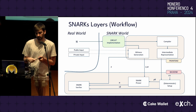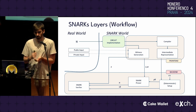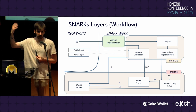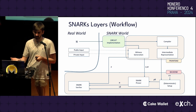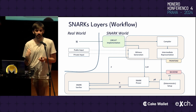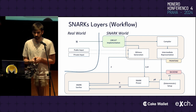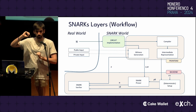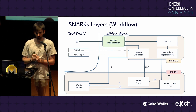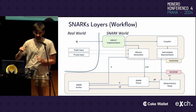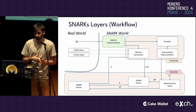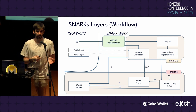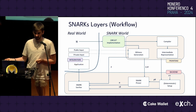The prover function takes as input the trace generated by the witness generator and the prover key, and creates a proof. Then the verifier takes as input only the public parts of our trace — because of the zero-knowledge property some parts can be private — and it also takes the proof and the verification key, and outputs true or false depending on whether the proof can be verified.